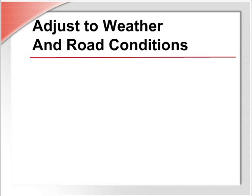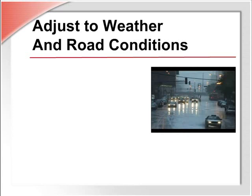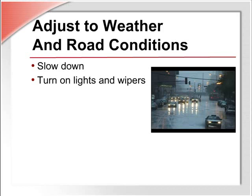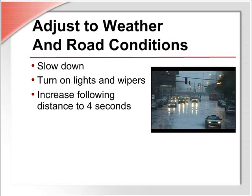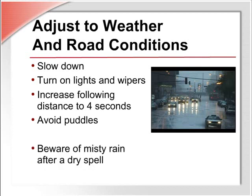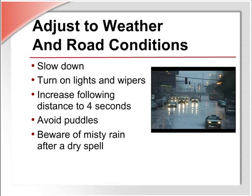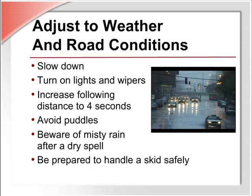When the weather or road conditions are bad, you need to adjust your driving accordingly to prevent accidents. Drive more slowly. Turn on your lights and wipers if necessary. Increase the following distance from 2 to 4 seconds in bad weather or when road conditions are poor. Avoid puddles — they can hide damaging potholes and get your brakes wet, making it harder to stop in an emergency. Be cautious when there is a light, misty rain after a dry spell, as the moisture mixes with road oil to create a slick surface. Be prepared to handle a skid — if you skid, take your foot off the gas and turn the wheel in the direction you want the front of the car to go, using a light touch and keeping your foot off the brake.